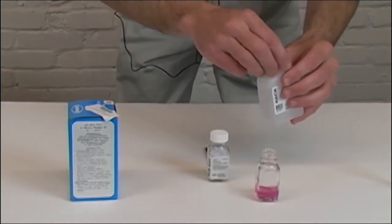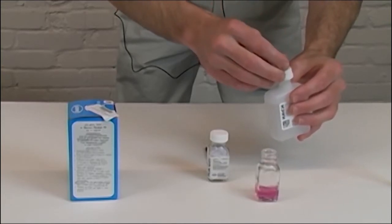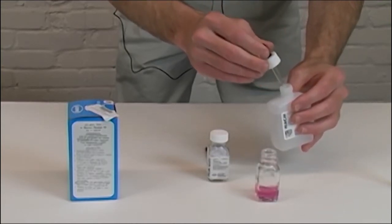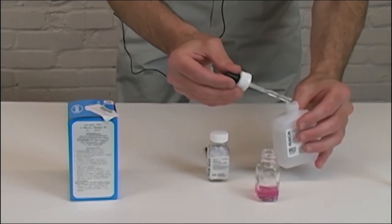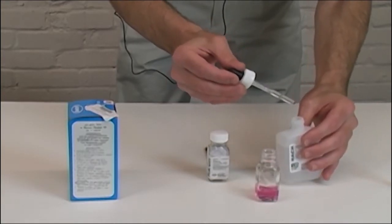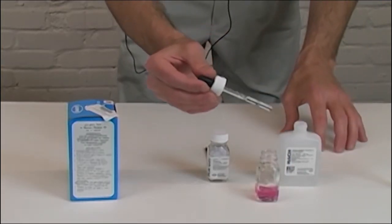Then you'll take your titrant solution and it's very important you count the number of drops that you're placing in here. For each drop it'll tell you a grain of hardness. So two drops would be two grains of hardness, one drop would be one grain.